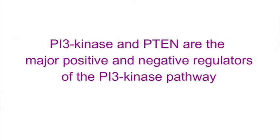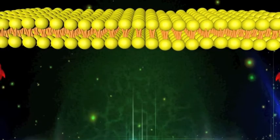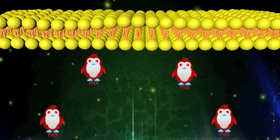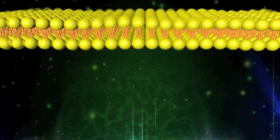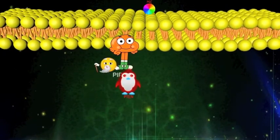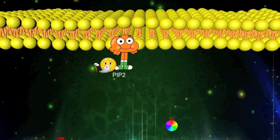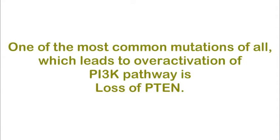PTEN is the major positive and negative regulator of the PI3 kinase pathway. These key signaling components are two of the most frequently mutated proteins in human cancers. PTEN, the negative regulator of PI3 kinase signaling, decreases its expression in many cancers and is downregulated through several mechanisms, including mutation and protein instability. PTEN regulates PI3 kinase signaling by dephosphorylating PIP3 to PIP2 — an action which is essential to its function as a tumor suppressor. Loss of PTEN by gene mutation occurs in a high percentage of common human tumors, and is one of the most common mutations leading to over-activation of the PI3 kinase pathway.